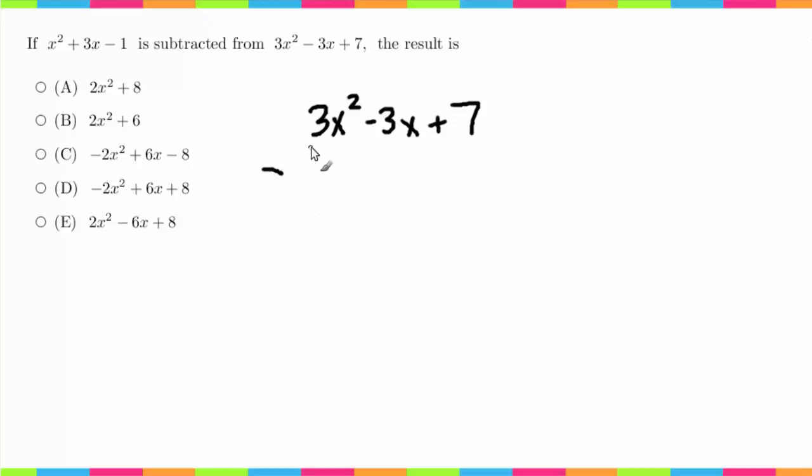This minus sign will be distributed through to every term, so that's the only thing you have to keep in mind. 3x squared minus x squared is 2x squared. Minus 3x minus 3x is negative 6x.